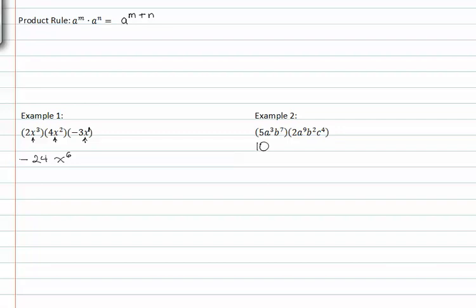And when we multiply our bases, we have to make sure that we keep track of which ones are together. And c is by itself. So first a, a to the third times a to the ninth is a to the twelfth.